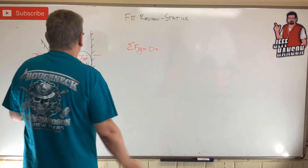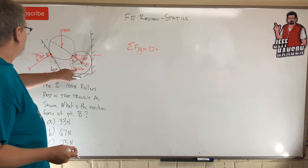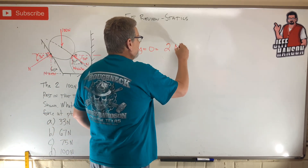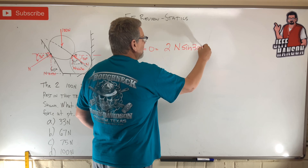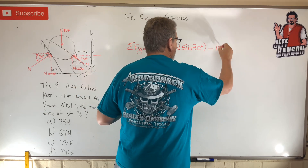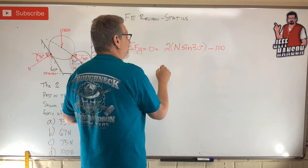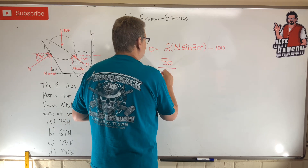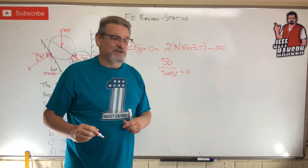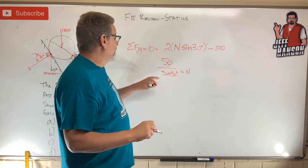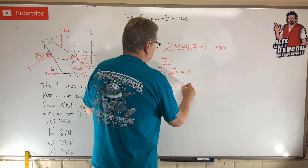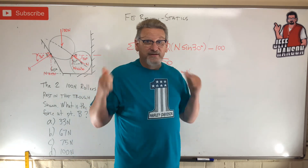The sum of forces in the y-direction equals zero: up stuff equals down stuff. Going uphill I have 2N·sin30°, and going downhill is the weight, 100 Newtons. So N = 100 divided by 2, divided by sin30°. Sin30° equals 0.5, and dividing by a half is the same as multiplying by 2, so N equals 100 Newtons. No calculator needed — easy!